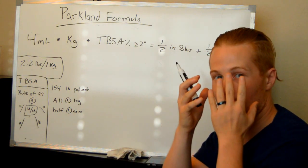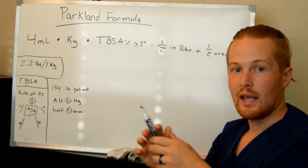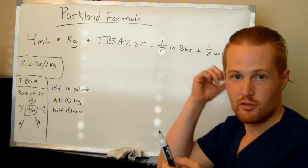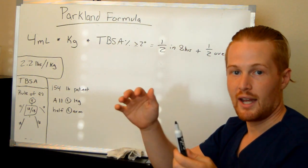So in summary, 9% for the head and each arm, and 18% for the chest, 18% for the back, 18% for the left leg, 18% for the right leg.